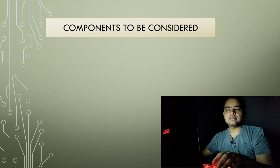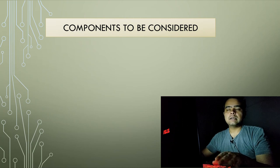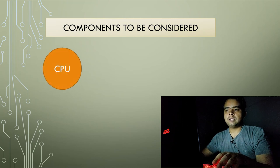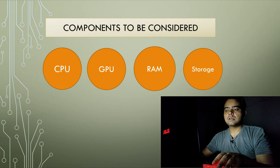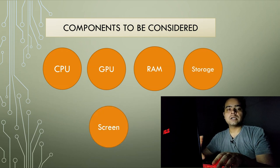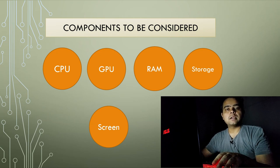So first, let's see what components — basically what parameters — we should consider before even thinking of buying a machine for data science. The components we should mainly consider are: first, CPU — the most important; second, GPU; then RAM or memory; storage; and the screen. We'll discuss each one by one, looking at the technical specifications and how they matter in our data science projects.